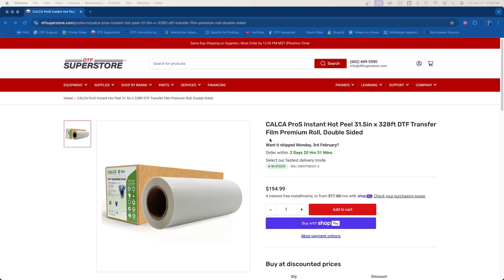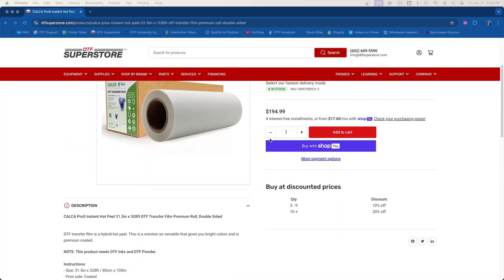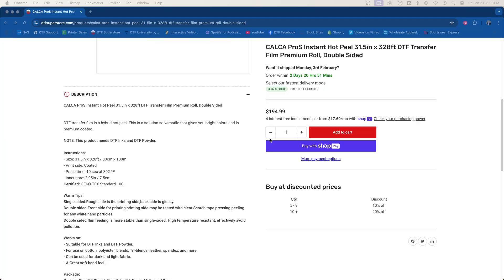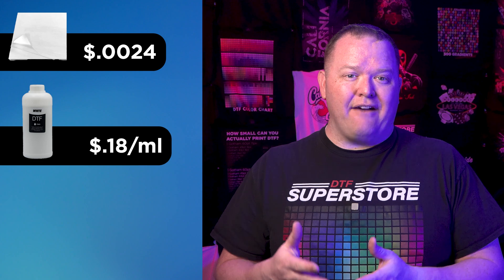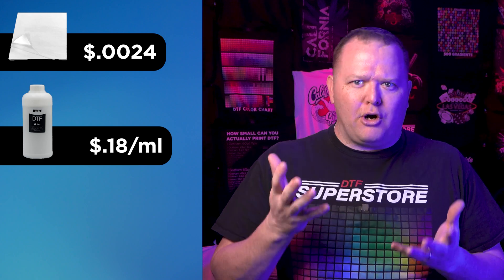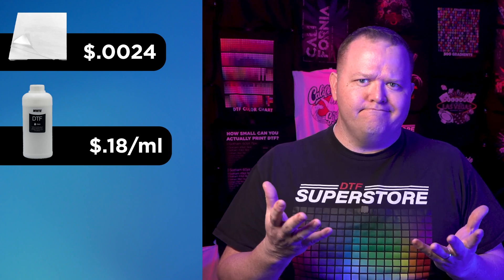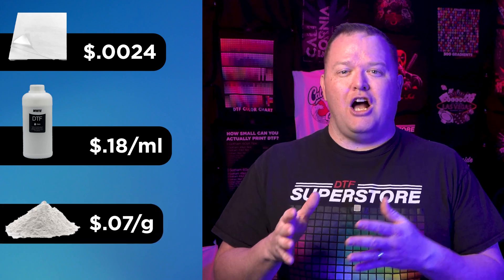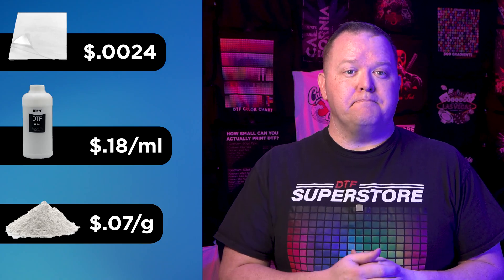The Roland has substantially less ink waste than other printers, which is awesome. The film I used is the Kalka Pro-S Instant Hot Peel and it costs $0.0024, or a quarter of a cent per square inch. The Roland ink cost average is roughly 18 cents per milliliter, and our super powder costs 7 cents per gram.